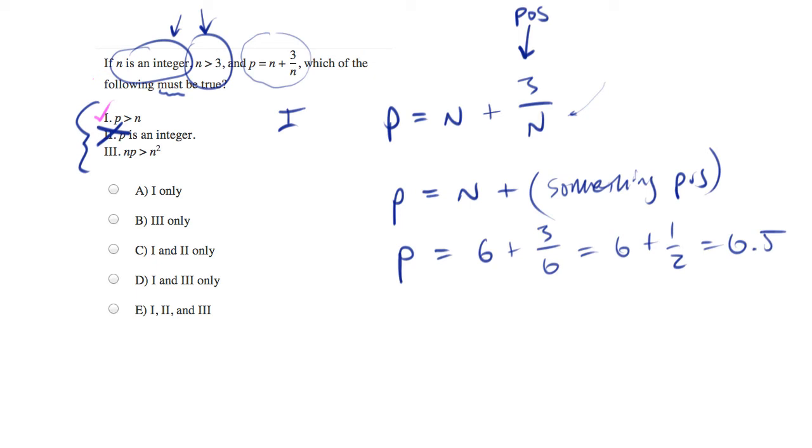All right. Let's look at statement 3. NP is greater than N squared. Well, let me see if I can translate this into something a little bit more relevant.